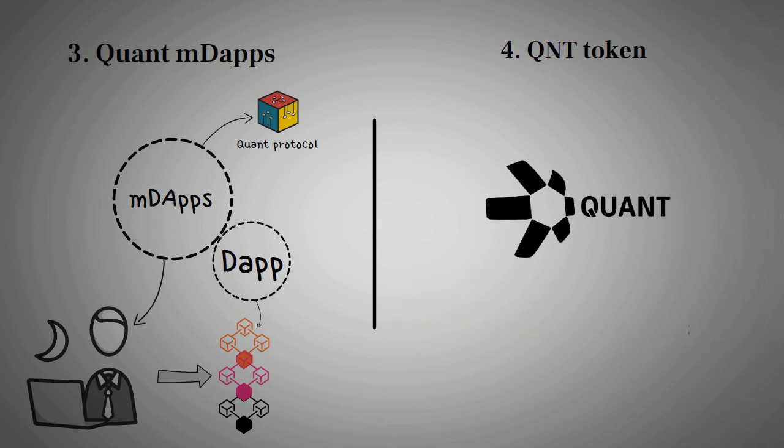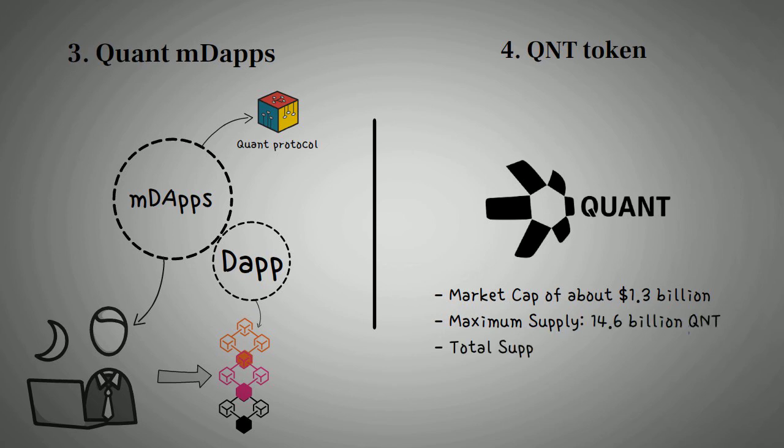The token has a market cap of about 1.3 billion dollars and a maximum supply of 14.6 billion QNT, with a total supply of 14.6 billion QNT, currently at a market price of about 102 US dollars.